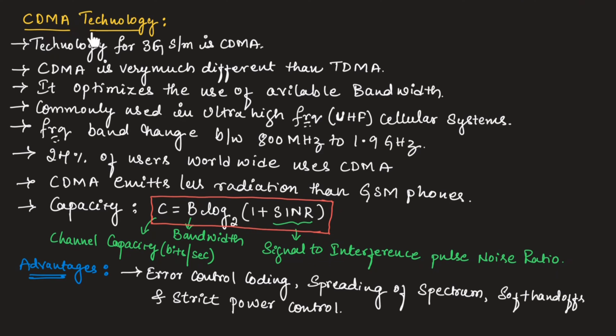Now, let us understand CDMA technology. The dominant technology or main technology that is used for third generation system is CDMA, which is code division multiple access. CDMA is very much different than TDMA. CDMA is code division multiple access and TDMA is time division multiple access.